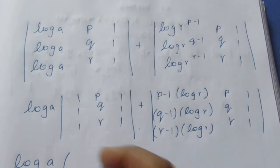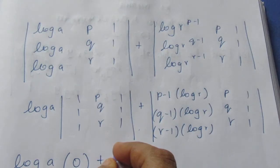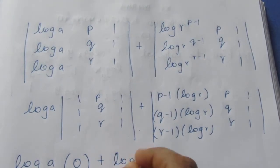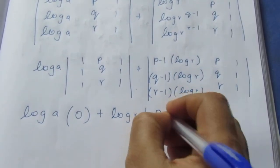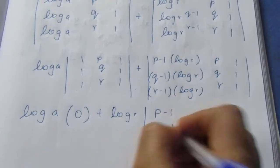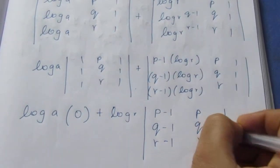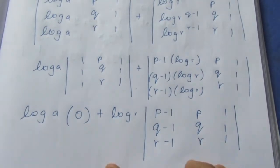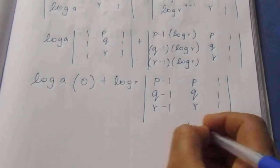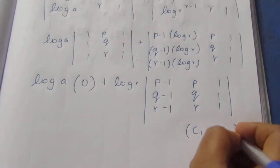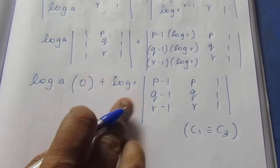After factoring, column 1 and column 3 become identical, so the determinant equals 0. In both resulting determinants, two columns are the same, which means each equals zero.